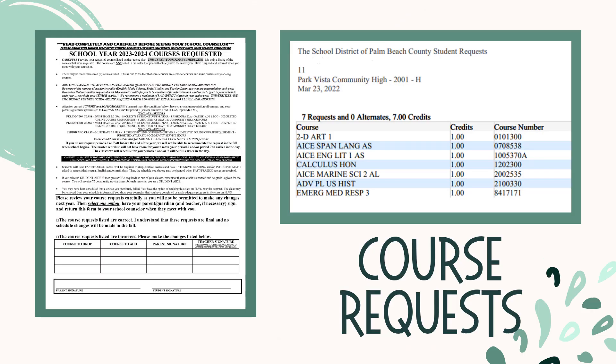Before meeting with your school counselor, you will receive a copy of the courses you requested on your course selection sheet with an explanation on the reverse side. Please sign this, have your parents sign this, and bring it to your meeting. If you have any adjustments that need to be made to your course requests for next year, follow the outlined procedure. No changes can be made without a parent signature.